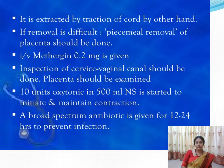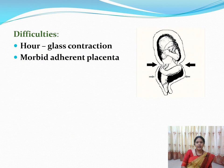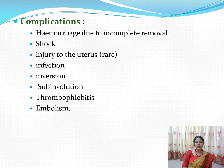If you are unable to separate the placenta manually, it can be removed in pieces. If there is an hourglass constriction or the placenta is morbidly adherent, manual removal may be very difficult. Complications of manual removal include hemorrhage, shock, injury to the uterus, infection from introducing the hand into the vagina, uterine inversion, sub-involution, and risk of thromboembolism and embolism.